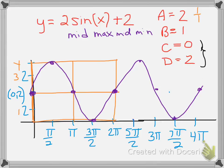So that was with two parameter changes — an amplitude and a vertical shift. So let's look at one more that changes the horizontal components. We'll do both horizontal components together.